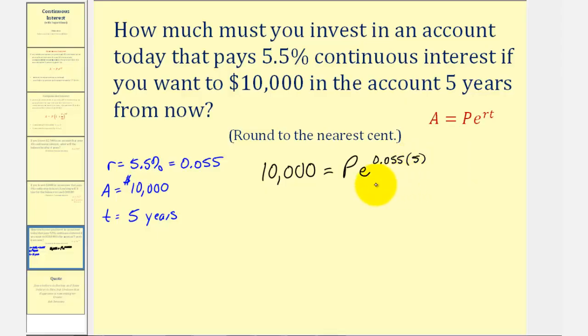So to solve this equation for P, we need to divide both sides by E raised to this power. So notice on the right side, this simplifies to one.